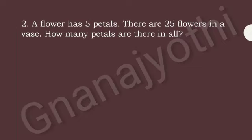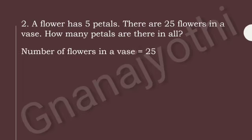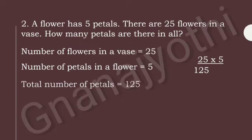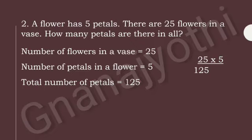Now look at this problem. A flower has 5 petals. There are 25 flowers in a vase. How many petals are there in all? Let us find out. Number of flowers in a vase is 25. Number of petals in a flower is 5. So if we multiply 25 into 5, we get 125. Therefore, the total number of petals is 125.